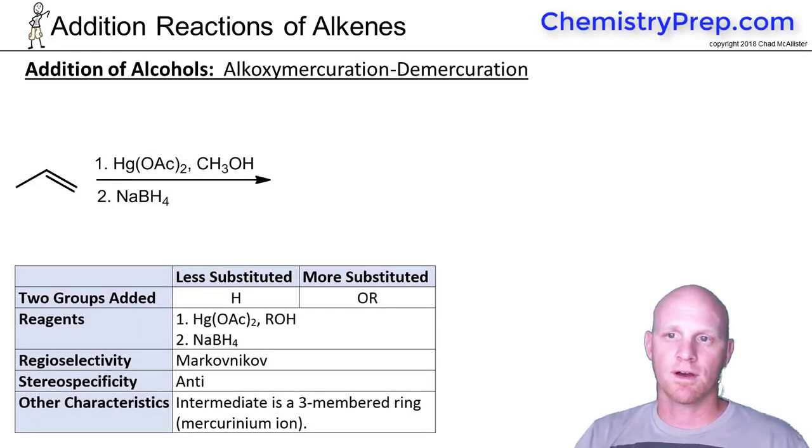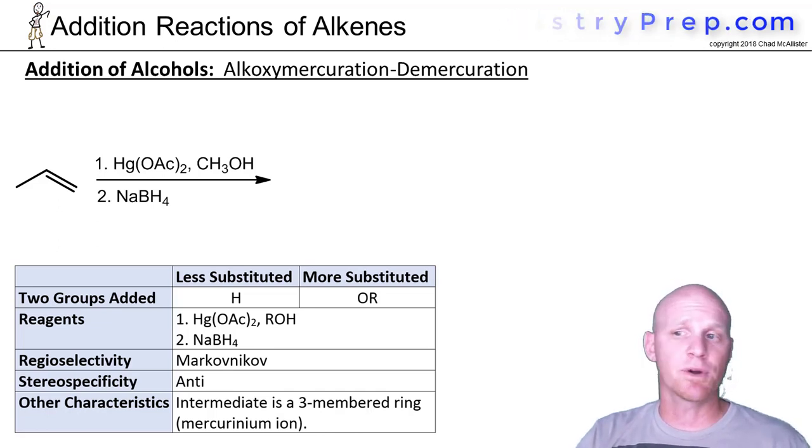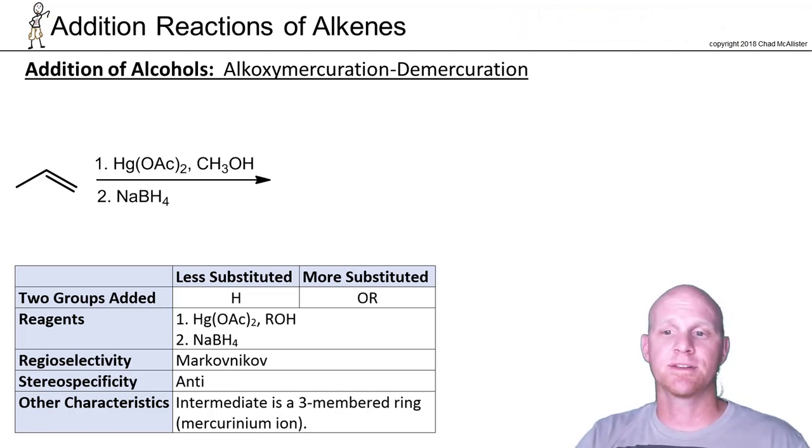Our second method for adding an alcohol across an alkene is totally analogous to oxymercuration-demercuration. We call it alkoxymercuration-demercuration.